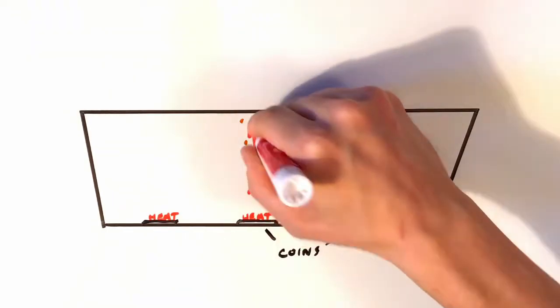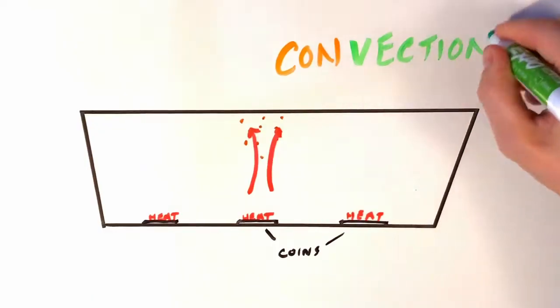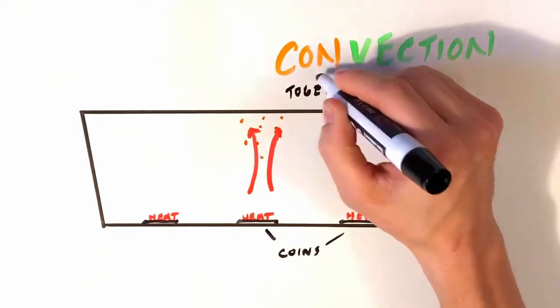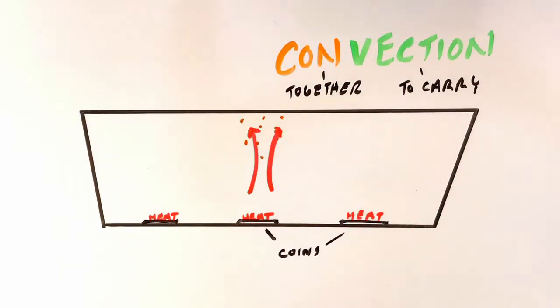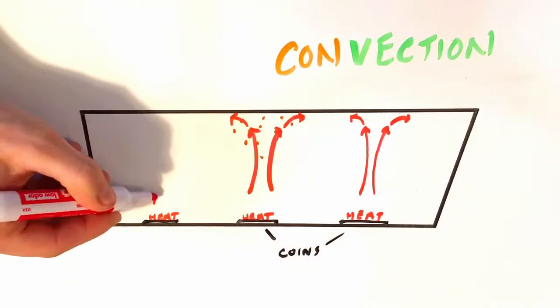And there's a name for this. This process in which heat causes a fluid to rise is called convection. Con means together. And vection means to carry. And there are convection currents above each of our sources of heat.